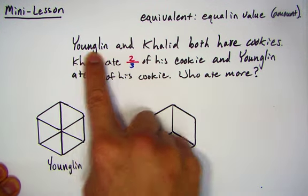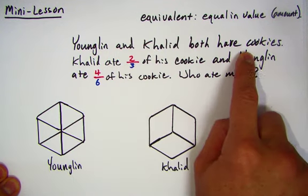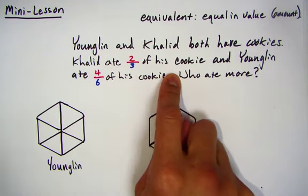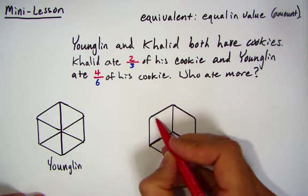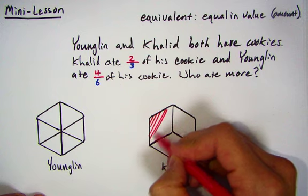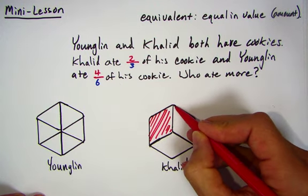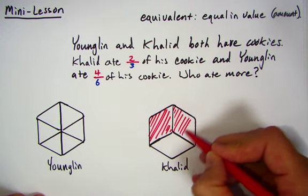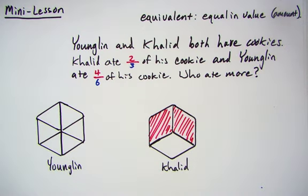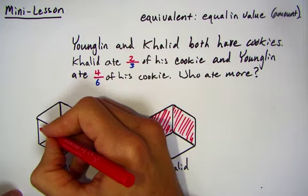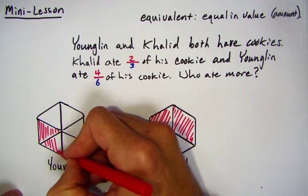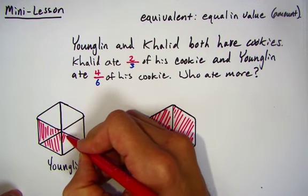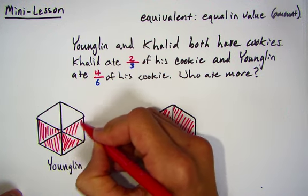Let's go over this story problem really quick. Young Lin and Khaled both have cookies. Khaled ate two-thirds of his cookie, so let's go ahead and color code and shade what Khaled has eaten. And Young Lin ate four-sixths, so I'm going to shade in four-sixths: one, two, three, and four.